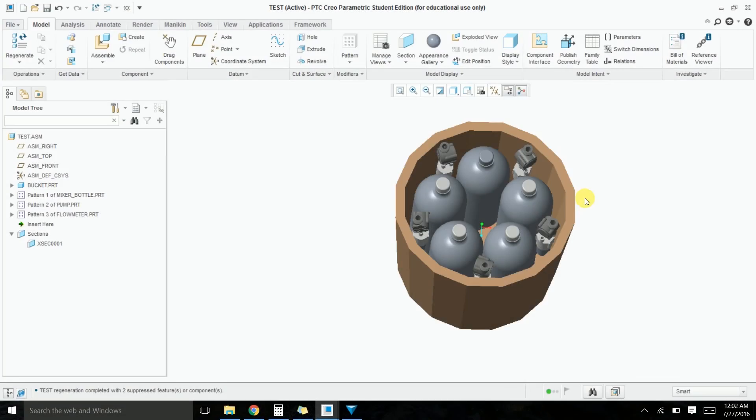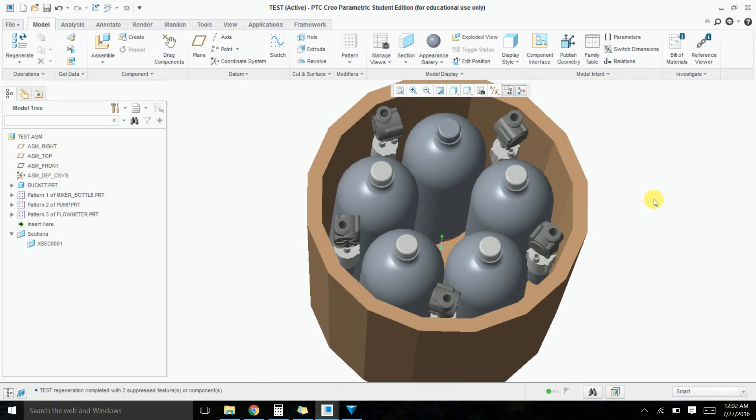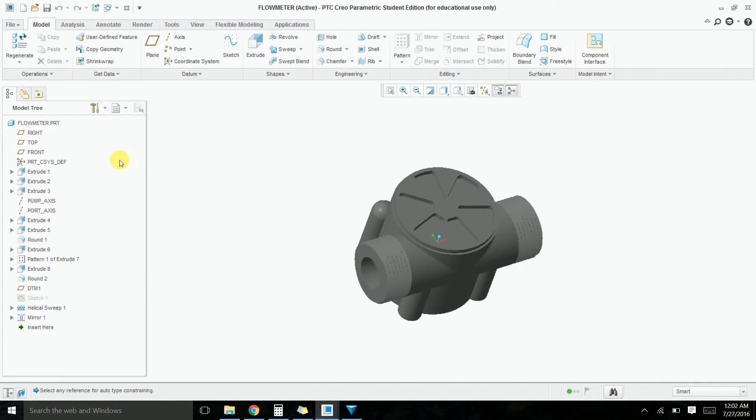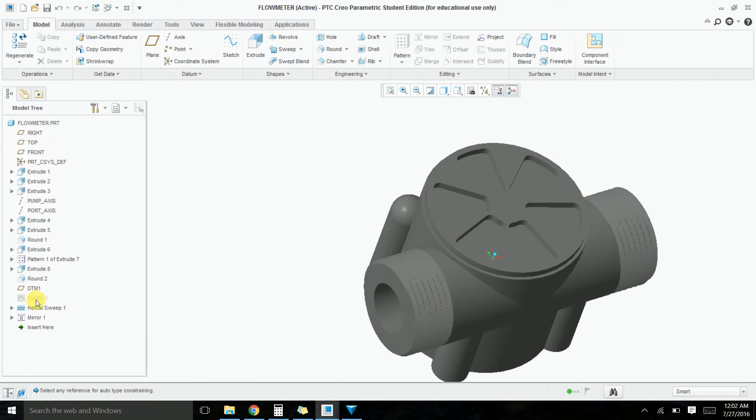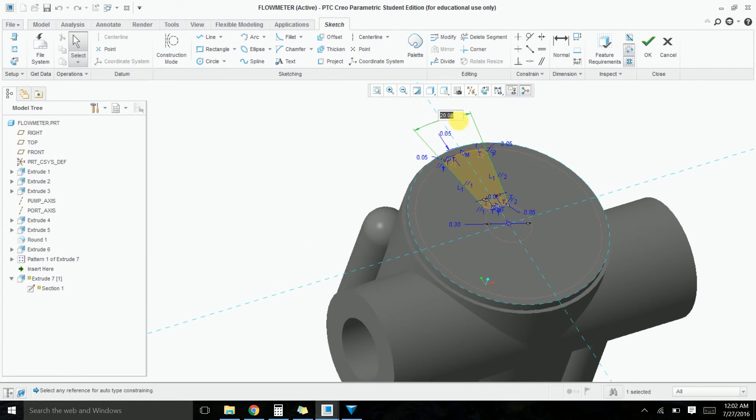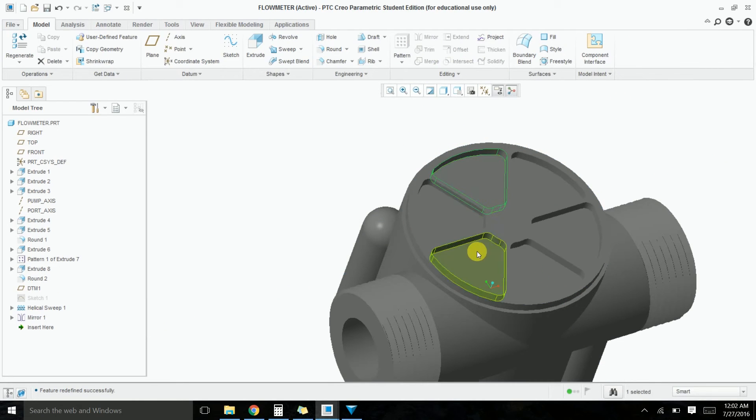We just got a new CAD software called Creo Parametric from PTC. This is different than 1-2-3D design because this is parametric modeling. For example, I pull up this flow meter that I modeled here. On the left-hand side, there's a tree here, and you can see all the steps that I took to make this model. If I wanted to go back into any of these steps—say I want to edit this pattern up here—I can just go back into this tree, edit one of my parameters, like this angle. I'll change it to 60 degrees, and that will update. All of these other features, which were children of this feature, also updated.